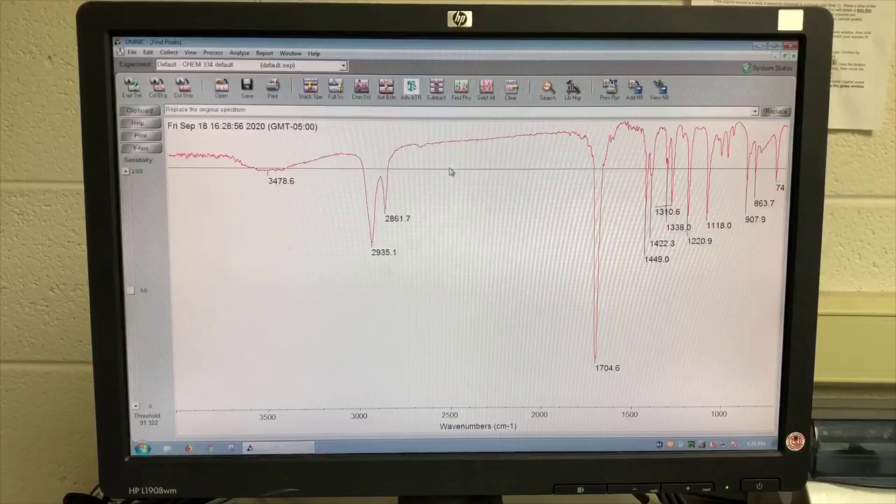Now I'm pressing the Find Peaks button, and I'm clicking up higher to see all of the peaks in the functional group region. At this point, you should take a screenshot of your spectrum, save it to a flash drive, and walk it back to your bench.